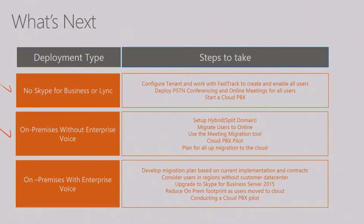The core function is: if you don't have Skype for Business or Lync, go to Office 365, start with meetings, plan your voice, hire a partner to help. Number two: if you have on-premises Lync or Skype for Business and you're not set up with enterprise voice — enterprise voice is probably the most difficult but integrated piece to making that migration — you should be starting your migration. Set up your hybrid configuration, migrate your users to online, use the meeting migration tool, and start a Cloud PBX pilot.